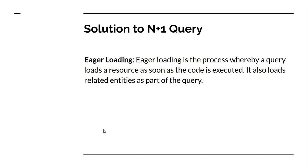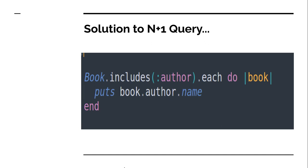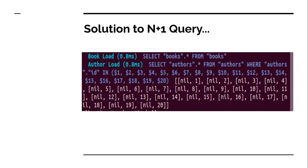The solution to the N+1 query problem is eager loading. Eager loading is the process whereby a query loads the resource as soon as the code is executed, and also loads related entities as part of the same query. In Rails, we use the `includes` method for eager loading. The `includes` method specifies relationships to be included in the result set — we simply replace `all` with `includes(:author)`, and this will run only two queries: one for all books and one for all authors.